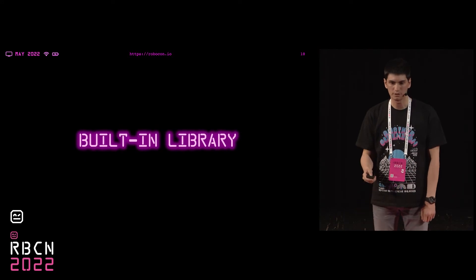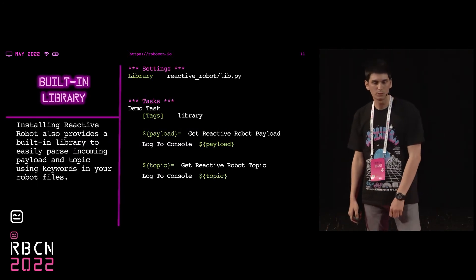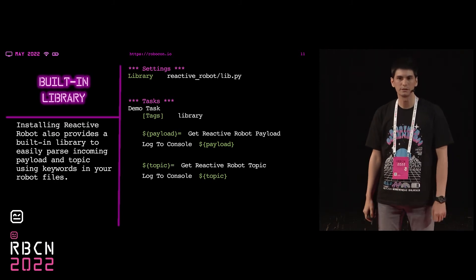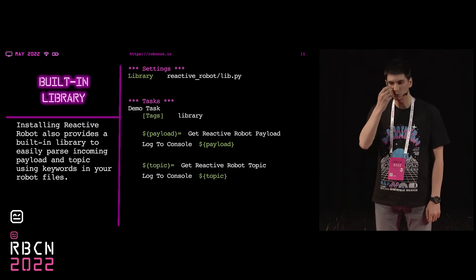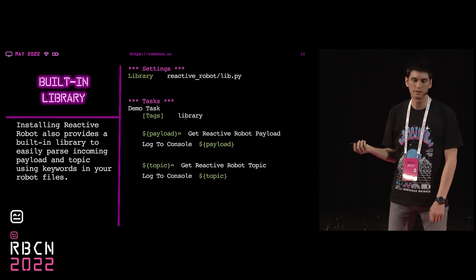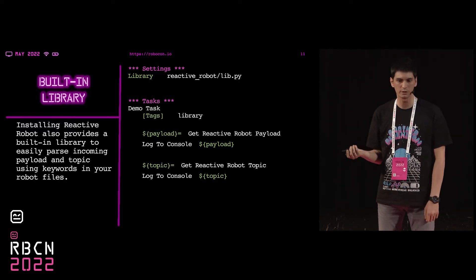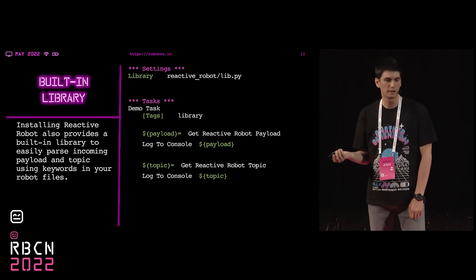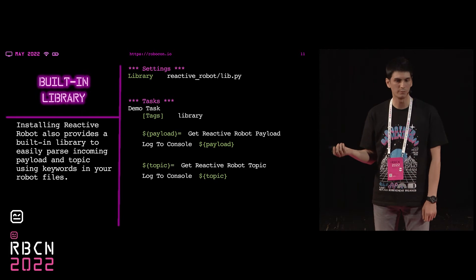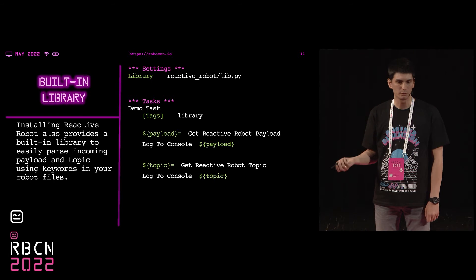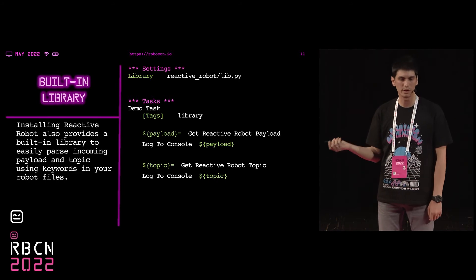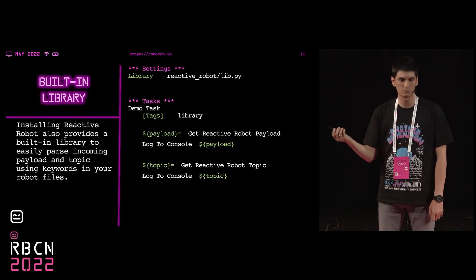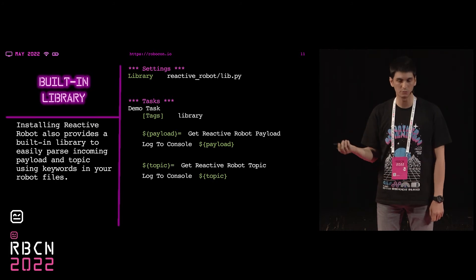When we trigger our robots with an event, we certainly want to know what the topic was and what the payload was. Installing Reactive Robot also provides a built-in library to easily parse the incoming payload and topic using keywords in your robot files. All you need to do is include reactive_robot/lib.py in your robot scripts, and two additional keywords — get reactive robot payload and get reactive robot topic — will be available and ready to use.